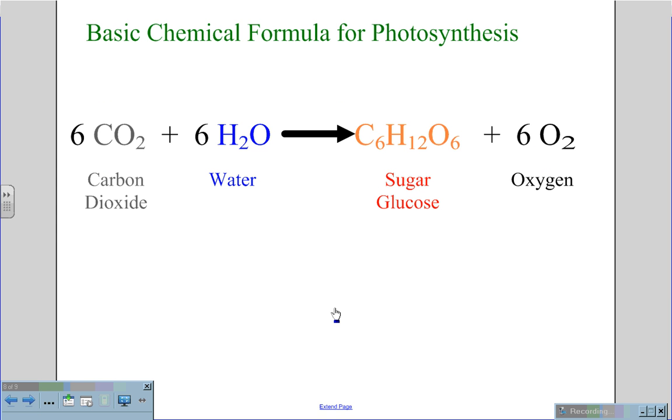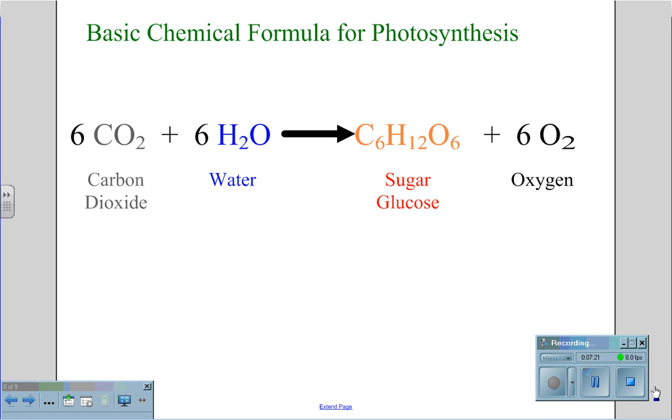The basic chemical formula for photosynthesis is six CO2s, six carbon dioxide molecules, for every six molecules of water to produce a single molecule of glucose, C6H12O6, and to give off six molecules of oxygen to the atmosphere. This is the basic process of photosynthesis.